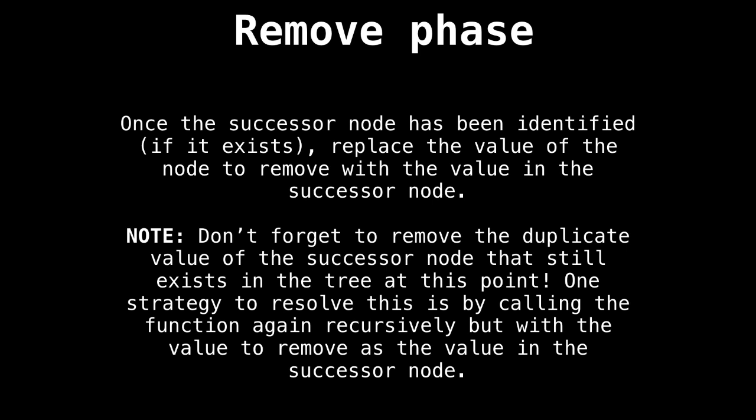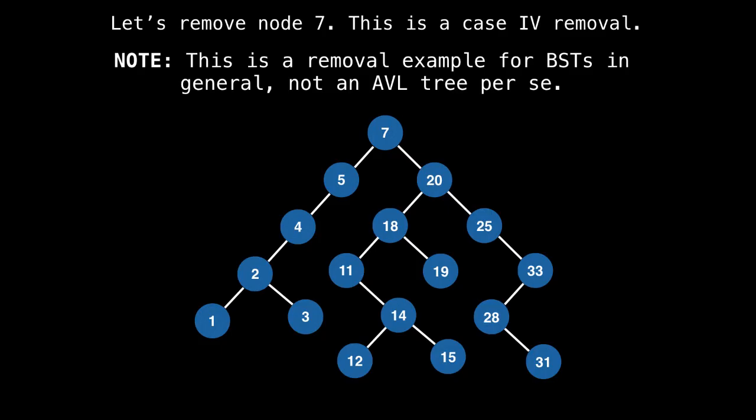However, the story doesn't end there. We must not forget to remove the duplicate value of the successor node that still exists in the tree. One common strategy to resolve this is to recursively call the function again, but with the value to remove as the value in the successor node.